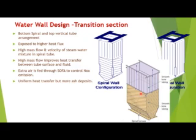In the water wall segment there is nucleate boiling, where the surface temperature is higher — almost 20 to 30 degrees centigrade above the saturation temperature — so the material needs to withstand high temperature and pressure. Due to the once-through technology, a thick-walled storage drum is not required, enabling shorter startups. High mass flow in water wall tubes gives uniform heat transfer between the tube surface and the fluid. There are also extra SOFA nozzles connected to the water wall.